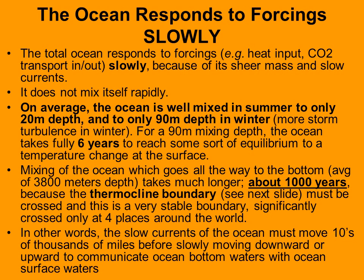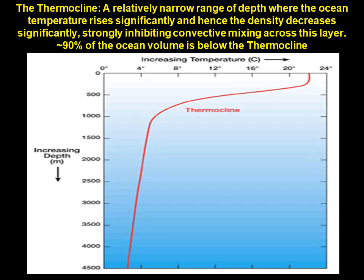Near the surface, temperatures are about 23°C on average. Then there's a steep cooling over less than a thousand meters, and below that the temperature is only about 2 to 4°C above freezing. So most of the ocean, in terms of its mass, is quite cold.